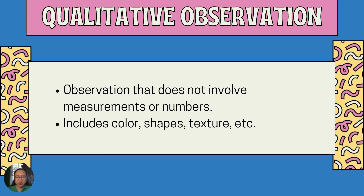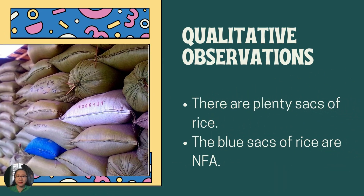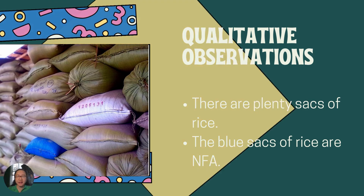In qualitative observation, observations do not involve measurements or numbers. They include colors, shapes, texture, and many more. For example, from the same picture you can say: 'There are plenty of sacks of rice' and 'The blue sacks of rice are NFA.' In making qualitative observations, you do not use numerical data — instead, these are textual or non-numerical data.